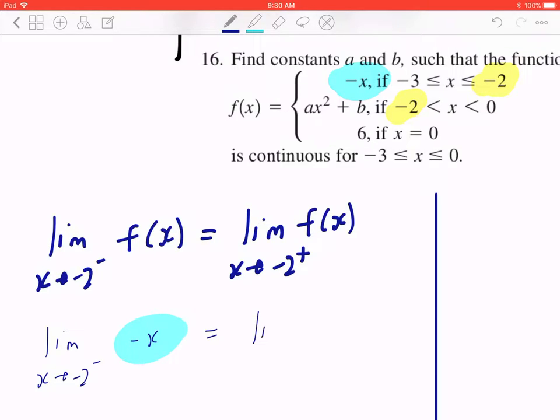Now likewise, if you look at the right hand side, as the limit is approaching 2 from the positive side, this means it's going to be the second piece of the piecewise function. So ax square plus b, I'm going to put brackets around that.